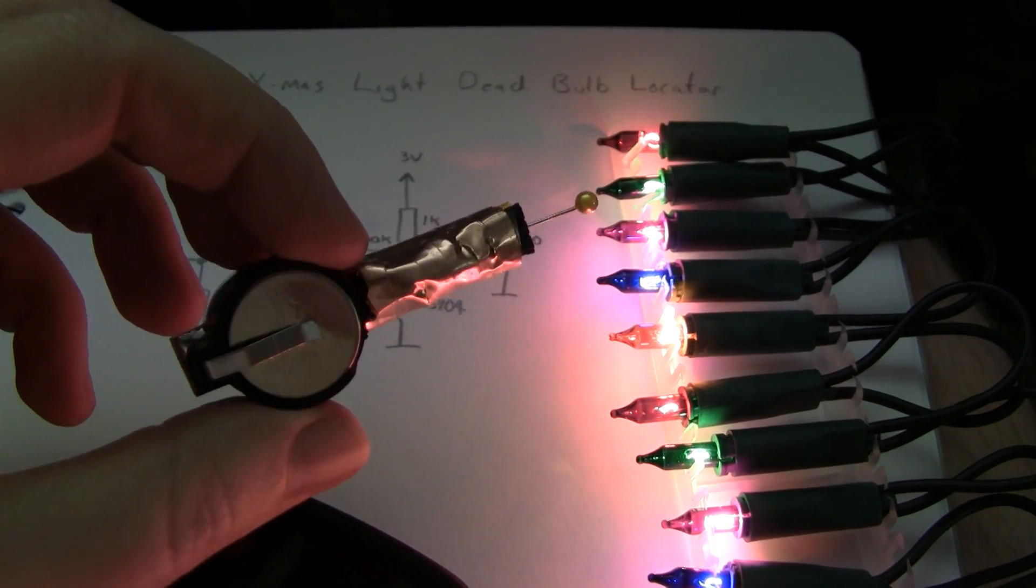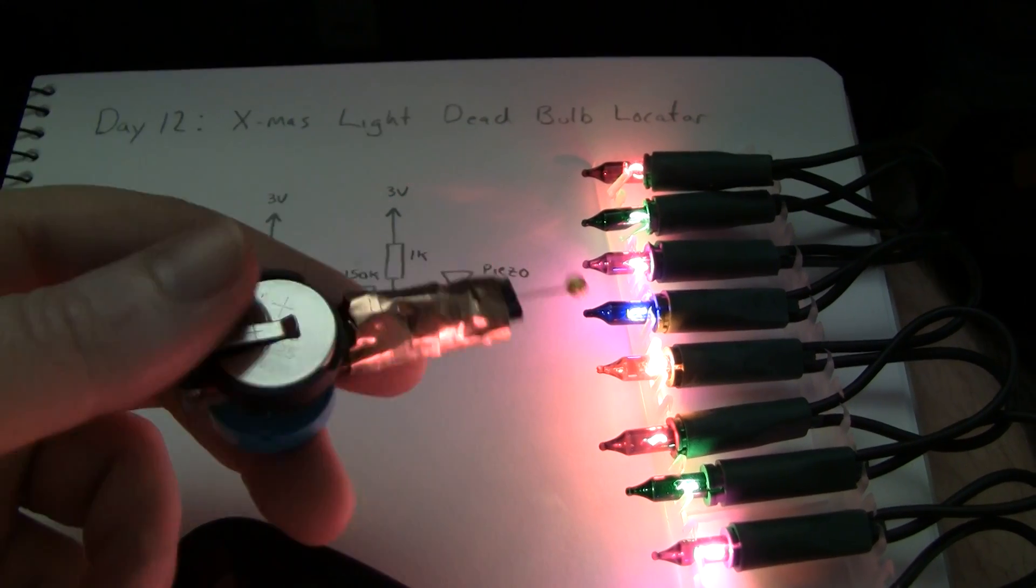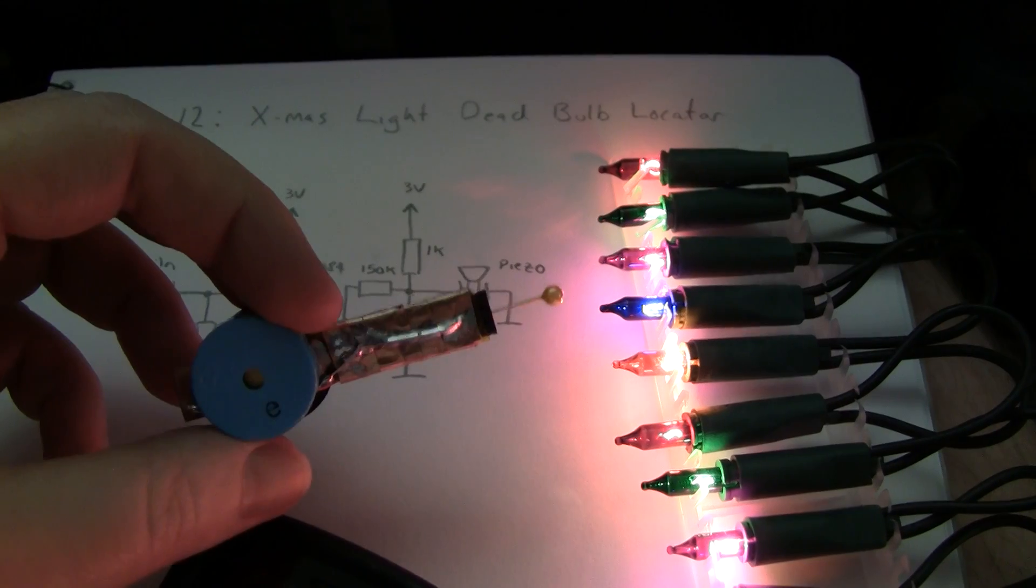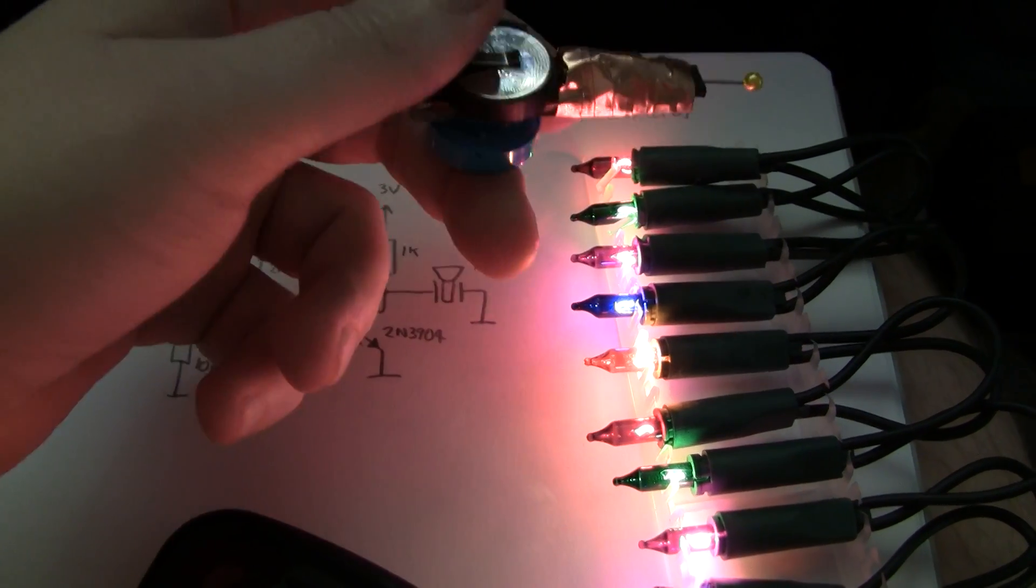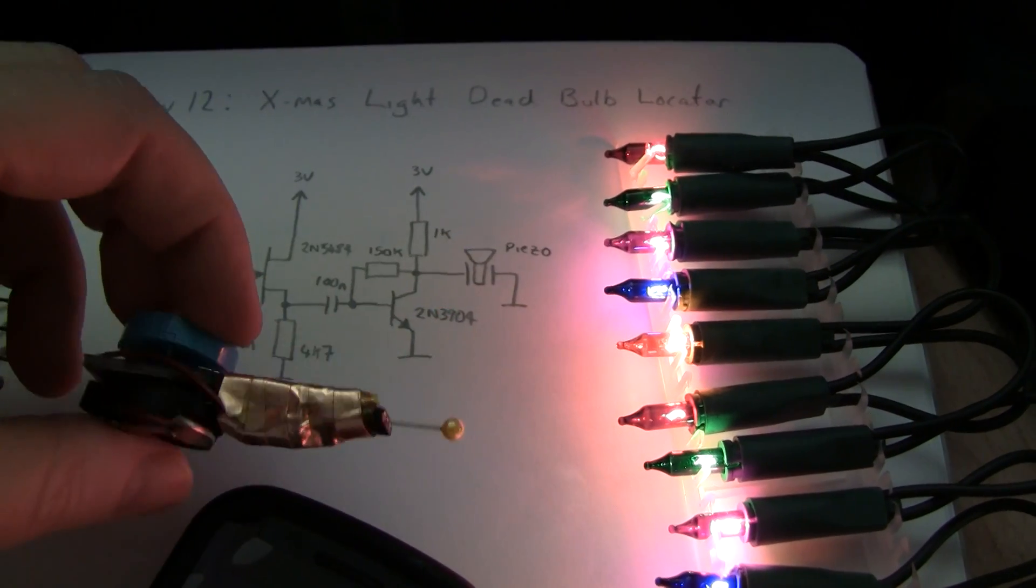Some day in the future we'll probably do a transmitter to match this so that you can clip onto pairs so you can trace cat five, see which particular pair you've hooked it up to at the other end, which is really, really useful. And also you can also use it with the Christmas tree lights, or any other circuit that you want to find if there's a broken wire somewhere.